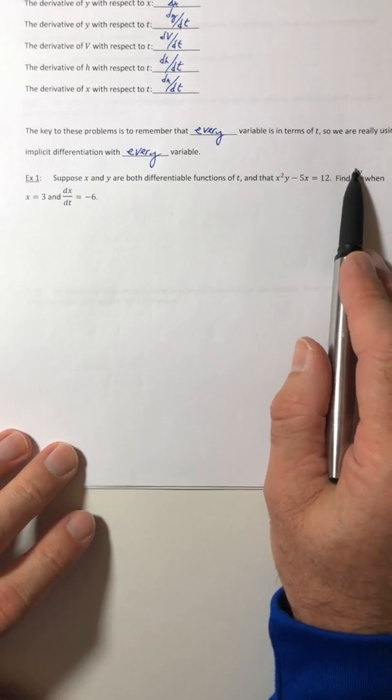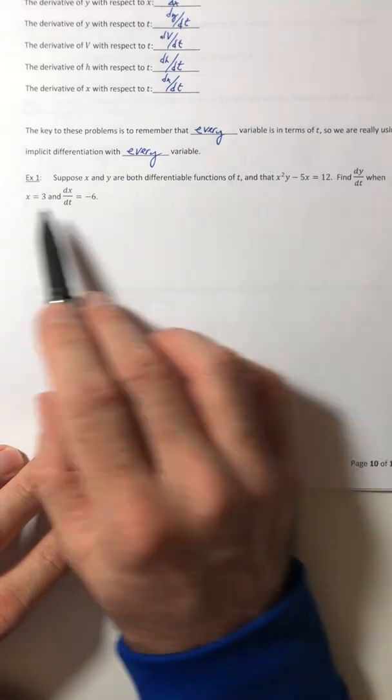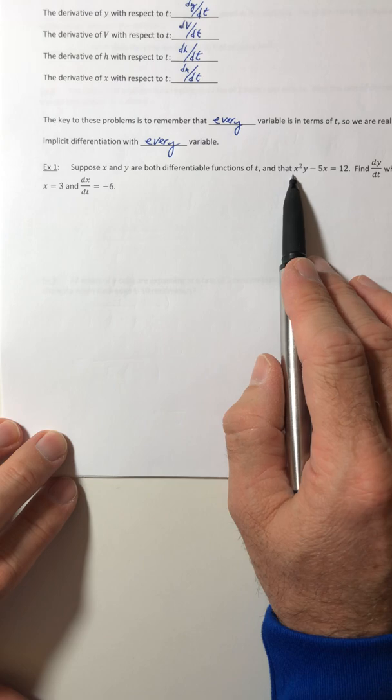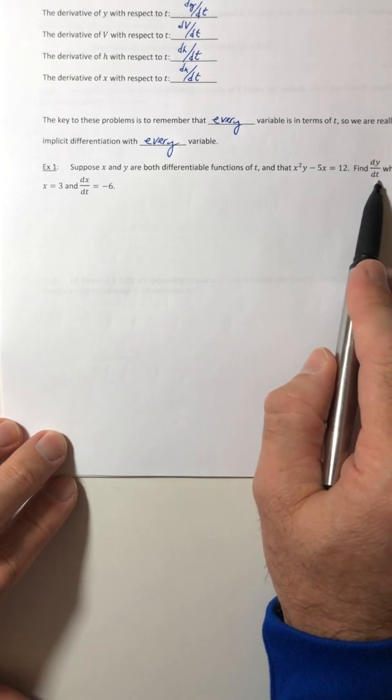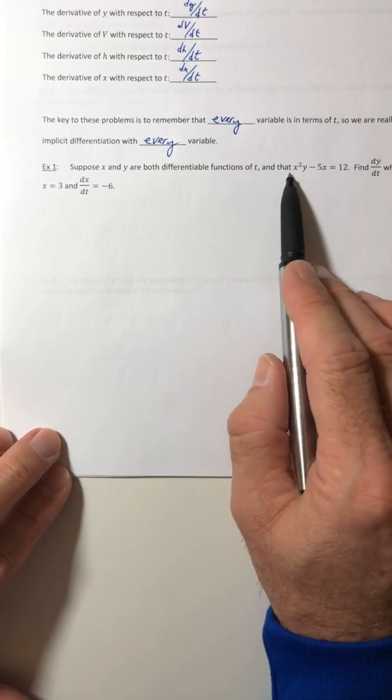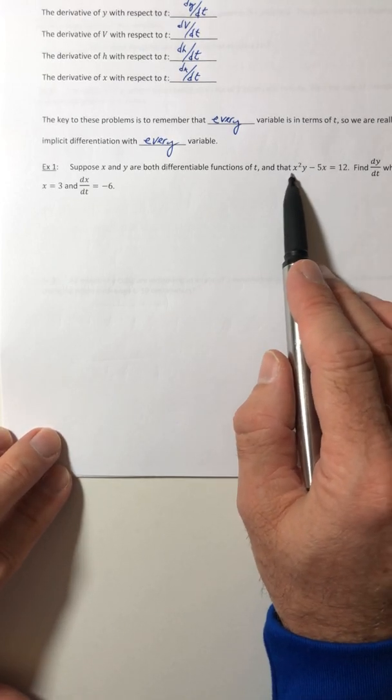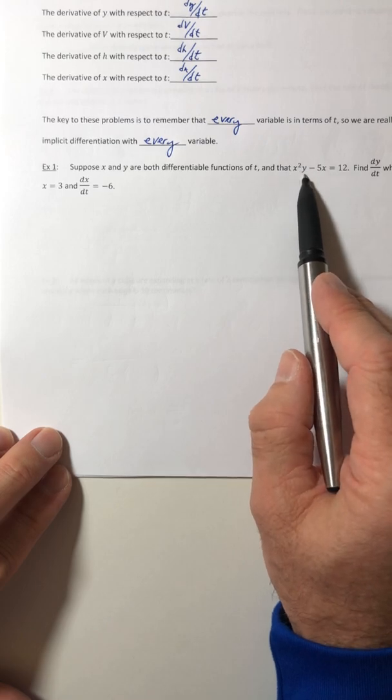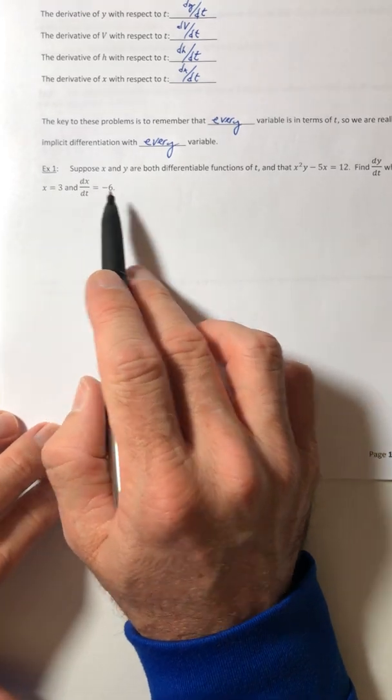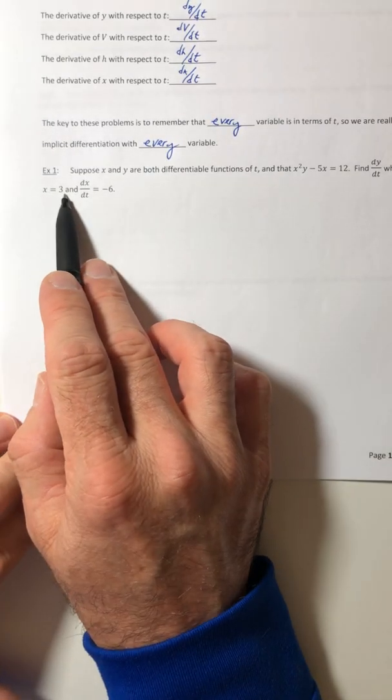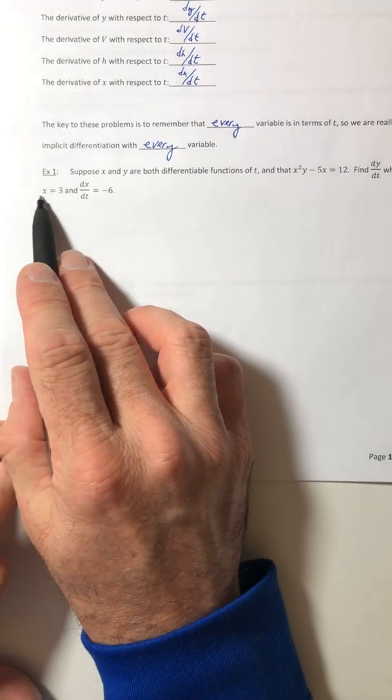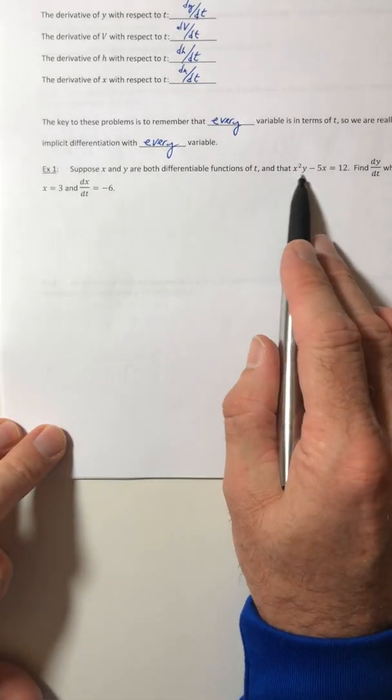So x and y are both in terms of t, we just don't know exactly what they are. We're going to find dy/dt when x equals 3 and dx/dt is equal to -6. So we've got to first, if we want to solve for that, we've got to first get it to show up, which means we've got to find the derivative. With this x²y, I'm going to need to use the product rule. Actually, first let me back up. We have x = 3, but we don't know what the y itself actually equals, so let's plug in x = 3 into the function.